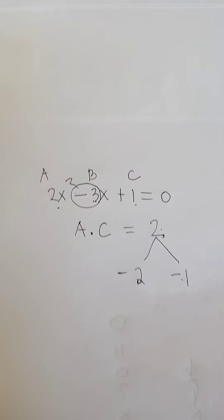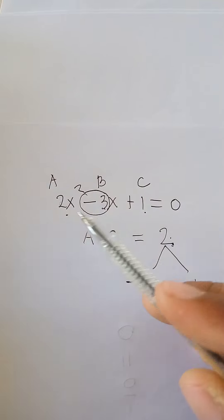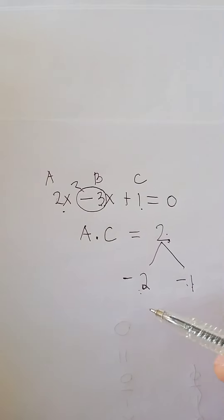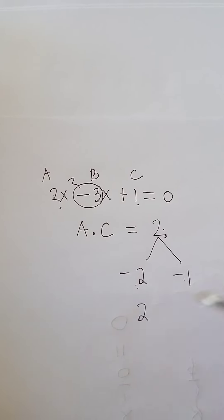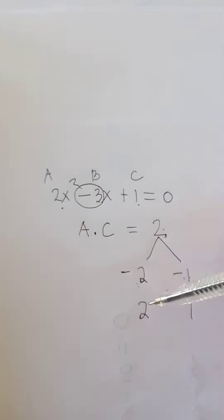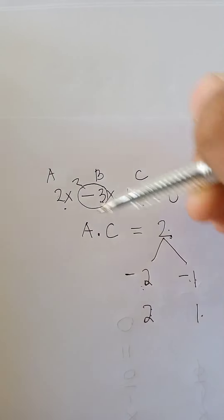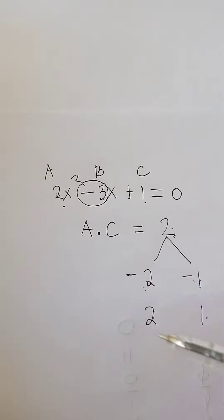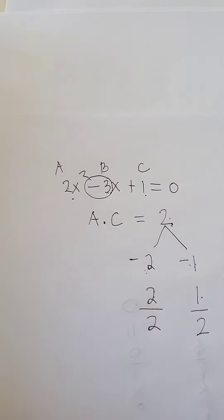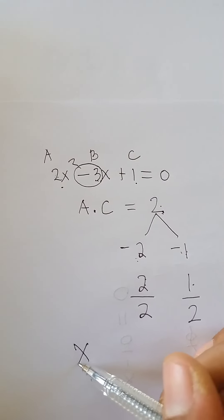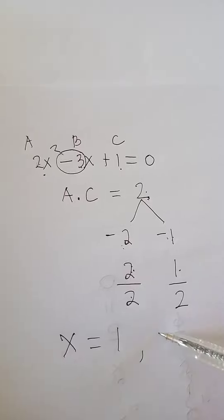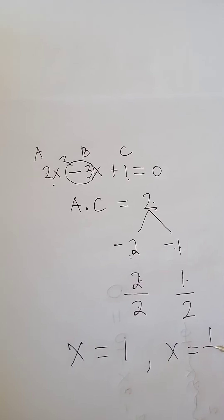Then, to find the values of x or the roots, change the sign of these two factors. This will become positive 2 and negative 1. And then, divide these two factors by the value of A. So we divide by 2. The values of x will be x equals 2 divided by 2, which is 1, and x equals 1 half.